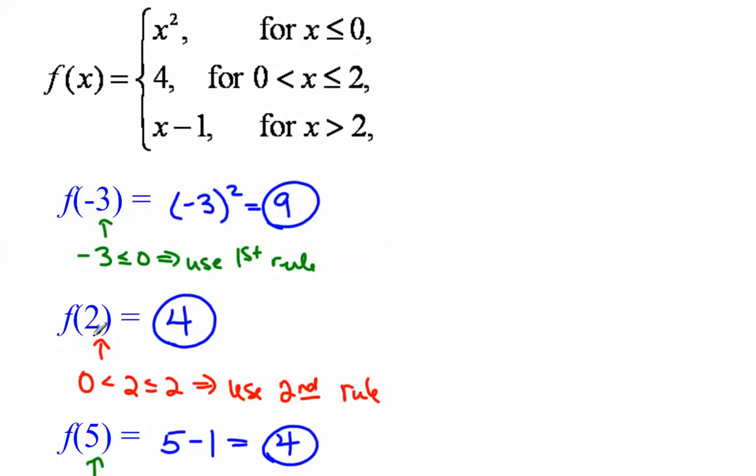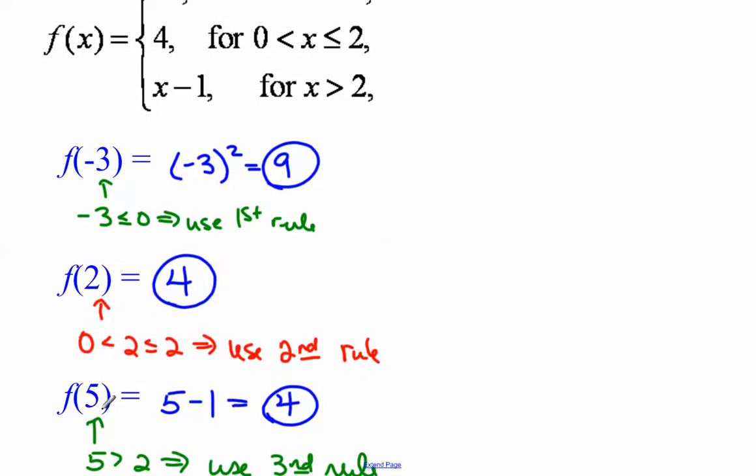All right, next one says f of 2. Well, 2 is not less than or equal to 0, but it does fit in this middle category here, because it's actually equal to 2, that little equal sign. So that means our function value is just going to be 4. And for the last one we have here, f of 5, well, that's not less than 0, and it's not between 0 and 2, but it is greater than 2, so we have to use the third rule, 5 minus 1, and I get an answer of 4.